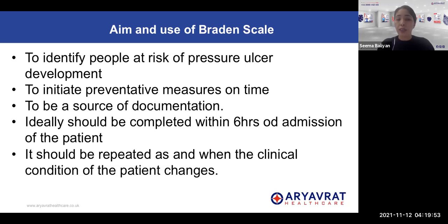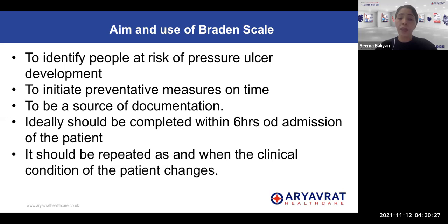The Braden's scale is used to identify people who are at risk of pressure ulcer development. It is also used to initiate preventative measures on time. It is also a source of documentation — an objective criteria that gives us the patient's journey and how the assessment has been done and what actions have been taken as per the Braden's score. Ideally it should be completed within six hours of admission of the patient, and it should be repeated whenever the clinical condition of the patient changes.